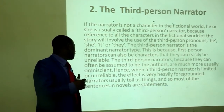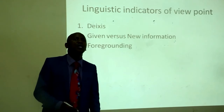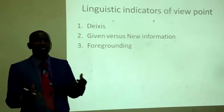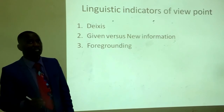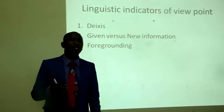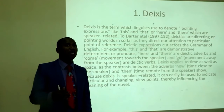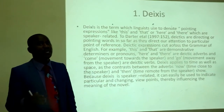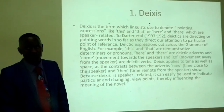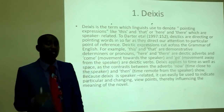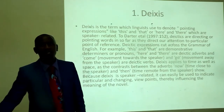Narrators usually tell us things, and so most of the sentences in novels are statements. Let us look at the linguistic indicators of viewpoint — the linguistic indicators of point of view. We have three: deixis, given versus new information, and foregrounding. To begin with deixis: deixis is the term which linguists use to denote pointing expressions — like this, that, here, there — which are speaker-related.